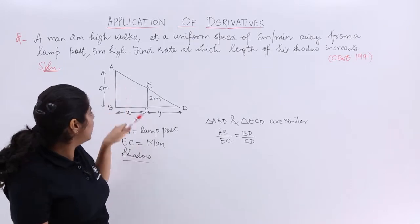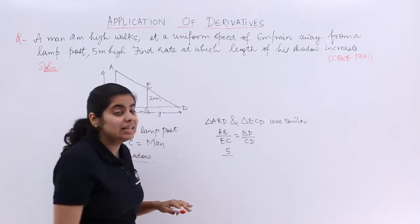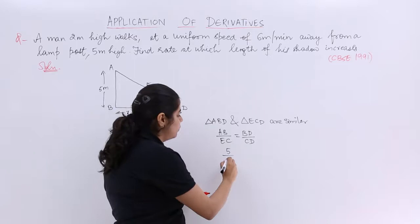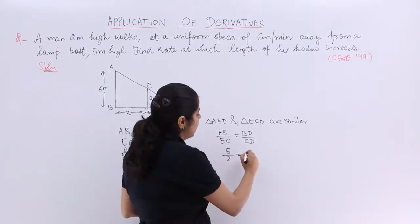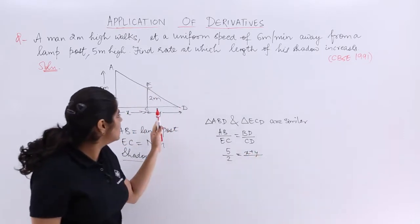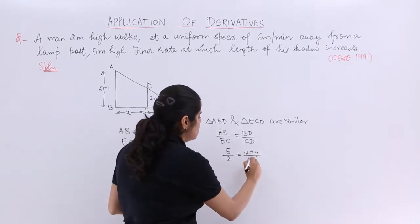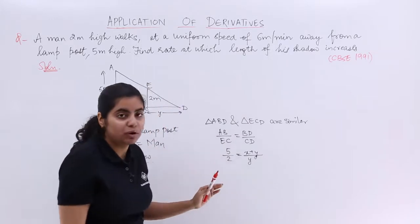Now what is AB? AB is nothing but 5. What is EC? EC is nothing but 2. What is BD? BD is nothing but x plus y. What is CD? CD is nothing but y. Very easy for our convenience, we have already done what we needed to.